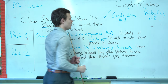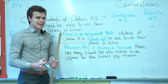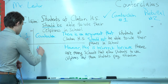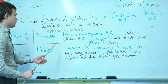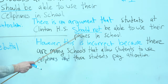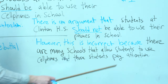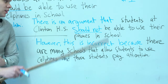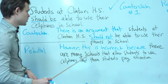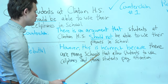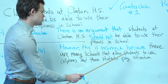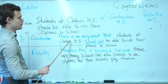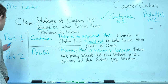Now we have to do the rebuttal — we need to say why this counterclaim is wrong. You can begin with 'However, this argument is incorrect because...' and then explain why students should use their phones. For example: 'However, this argument is incorrect because there are many schools that allow students to use cell phones and those students pay attention.' So you explain the counter argument to your claim and then do the rebuttal.